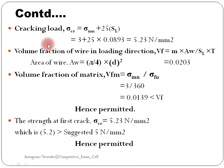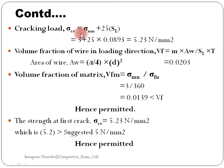After that we need to calculate the cracking stress. The formula is sigma cr equals sigma mn plus 25 times sl. Sigma mn is given, sl is 0.0893 per mm (the calculated specific surface). Putting the values, we get 5.23 N/mm² as the cracking stress.